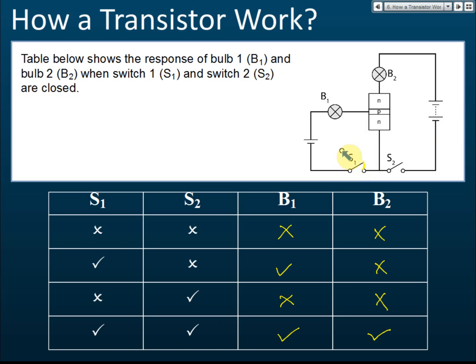If there is no current in the base circuit, there will be no current in the collector circuit. If there is current in the base circuit, then there will be current in the collector circuit. The current in the collector circuit is controlled by the base circuit. For now, just understand that the collector circuit is controlled by the base circuit — if the base circuit is off, there is no current flow in the collector circuit regardless.